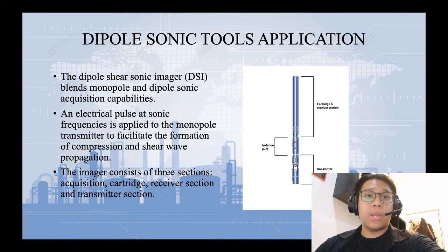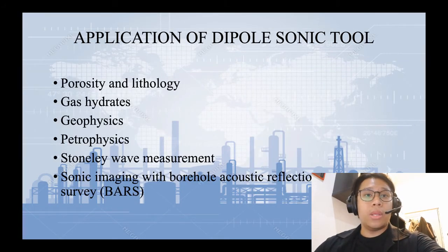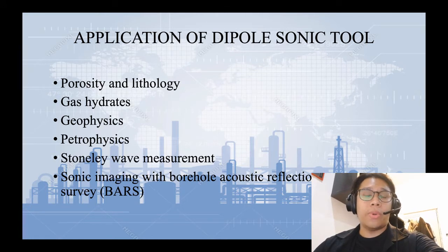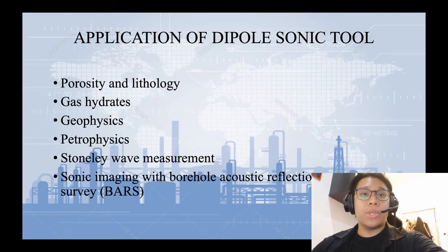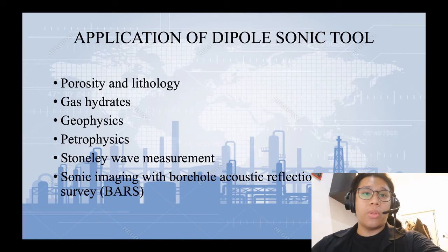The transmitter is divided into three parts: the cartridge and receiver section, the isolation joint, and the transmitter. For its application, it is used in porosity and lithology — the ratio of compressional to shear wave velocities provides information on porosity and lithology. It is also used in gas hydrates, where compressional and shear wave ratios can assess the amount of gas hydrates in a sedimentary sequence. Other applications include geophysics, petrophysics, measuring Stoneley waves, and sonic imaging with Borehole Acoustic Reflection Survey, also known as BARS.